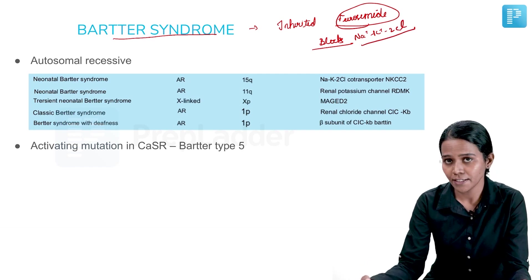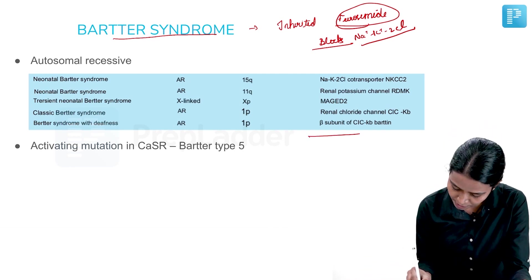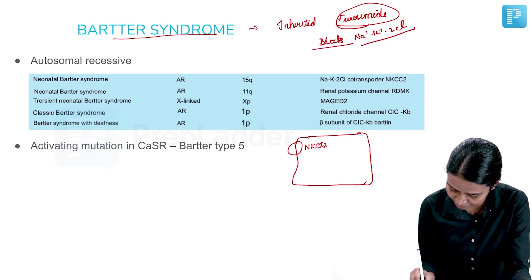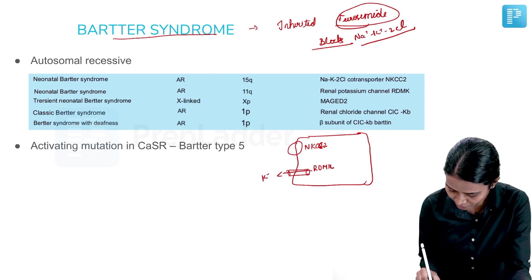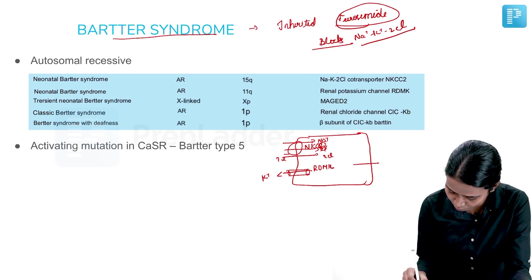Bartter syndrome is not as simple as blocking one channel — it blocks more than one. In the thick ascending limb of the loop of Henle, there is the NKCC2 (sodium-potassium-2-chloride) channel and the ROMK channel, which recycles potassium. The chloride is absorbed into the cell via the CLCNKB channel.